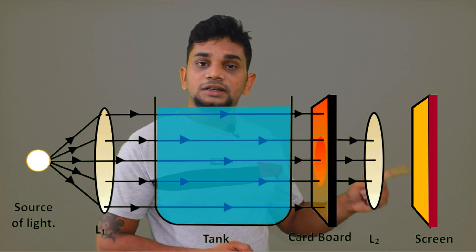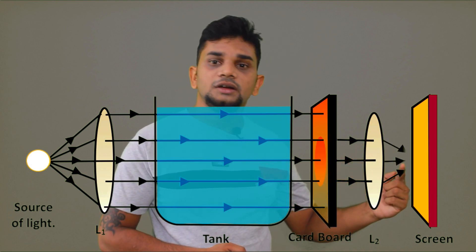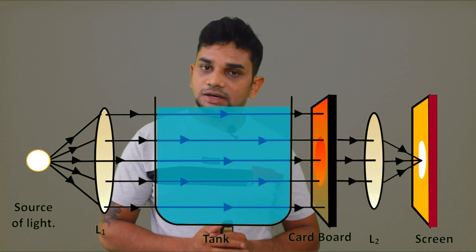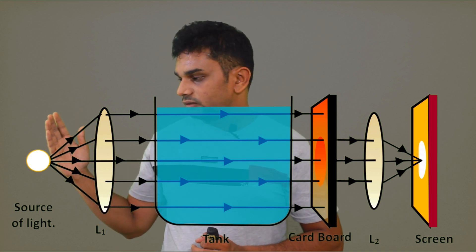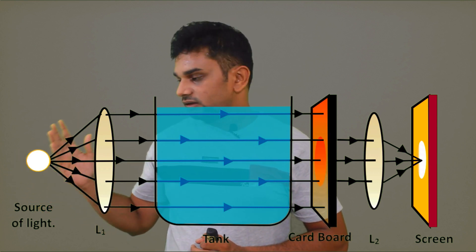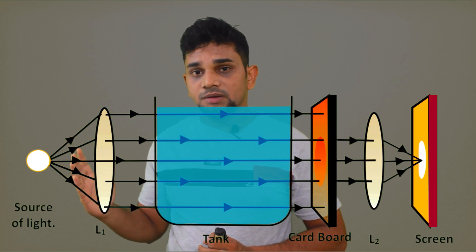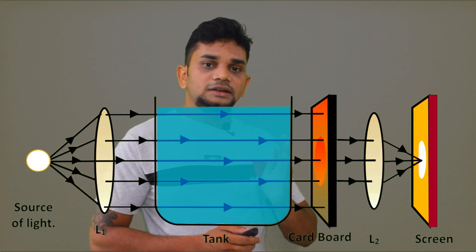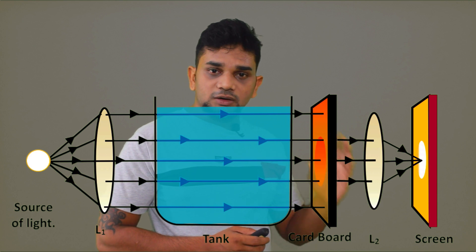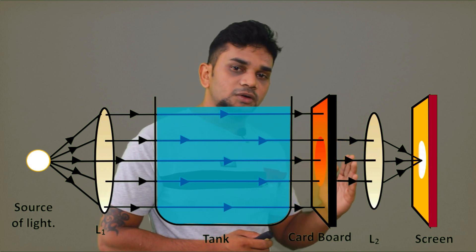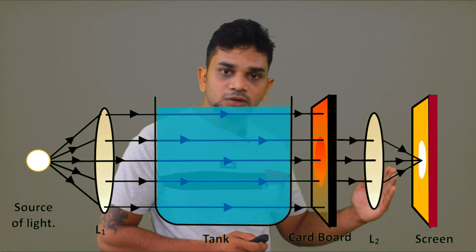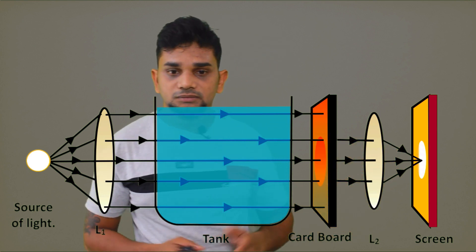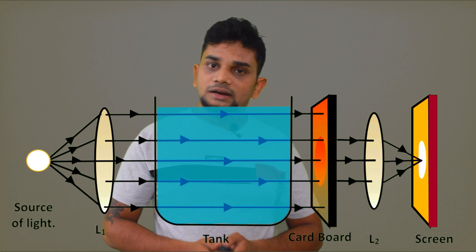L2 is a converging convex lens, and on the screen we are going to get white light. The source produces light, L1 converts it into parallel rays, which pass through the water and the cardboard, then through L2, and on the screen we are getting white light — there is no scattering.